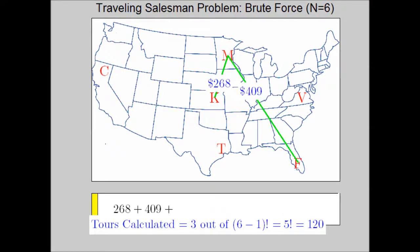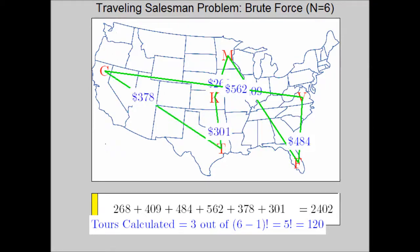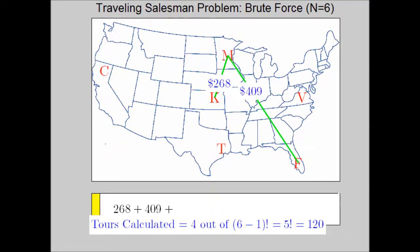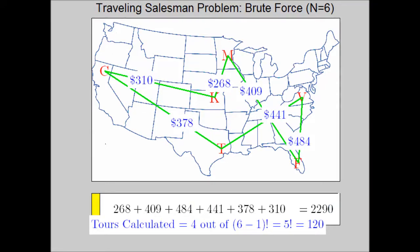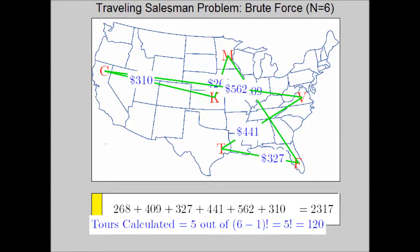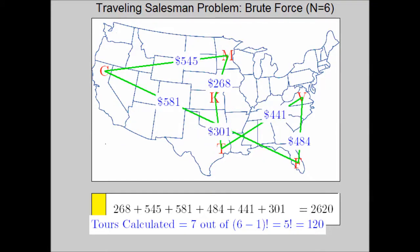For 6 cities, there's 120 different tours. Now, half that many can be the reversals of the original, so you really only have to check 60, even though in the video you're seeing all 120.